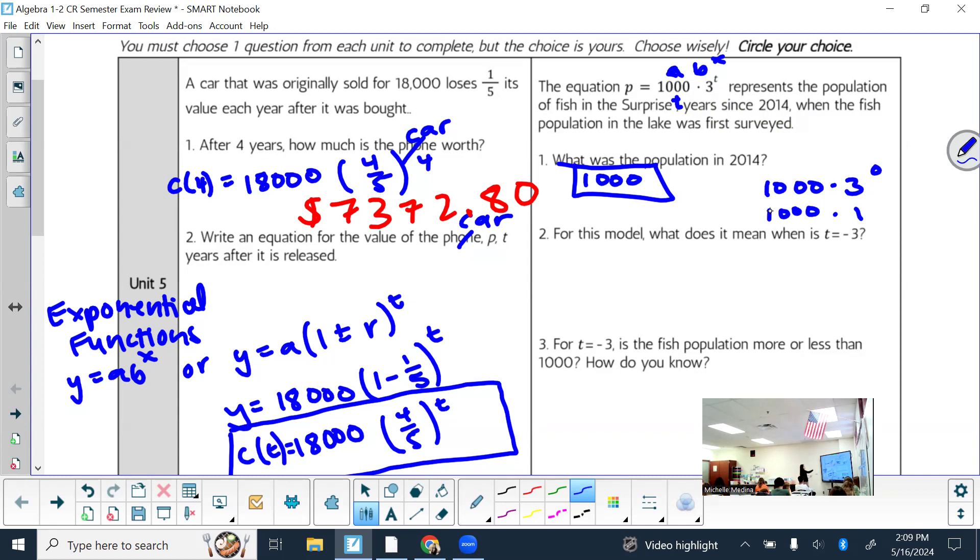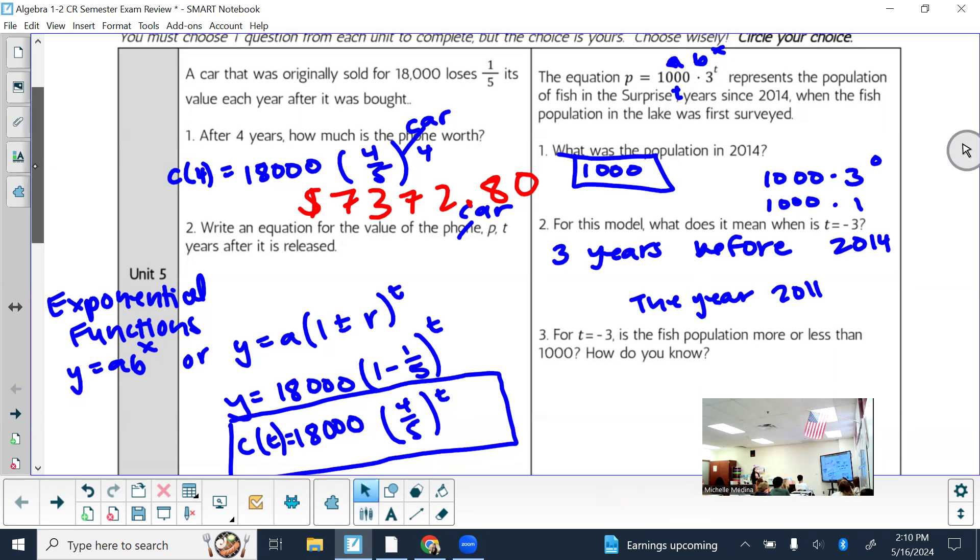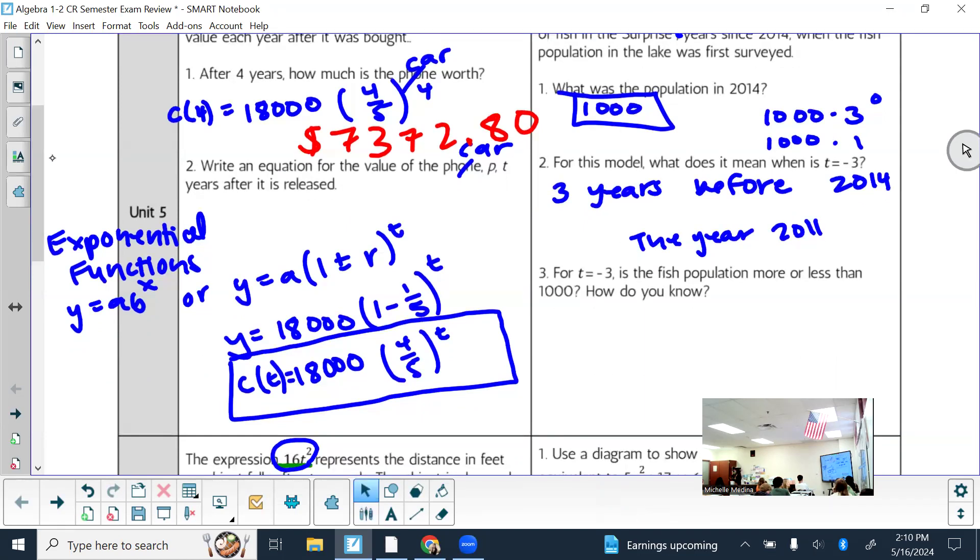Now for this model, what does it mean when T equals negative 3? Three years before 2014 would be a good answer. If T equals zero is 2014, then T equals negative 3 would be three years before that. Or what year? 2011. So in the year 2011. And it didn't even ask what the value is, so you don't have to put the value unless you want to. But you have to tell me what it means: three years before 2014.